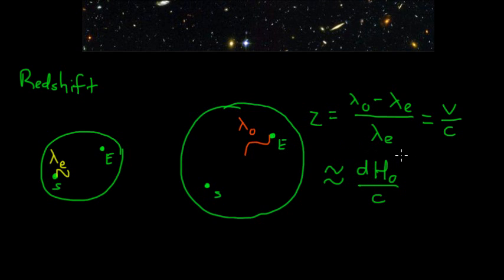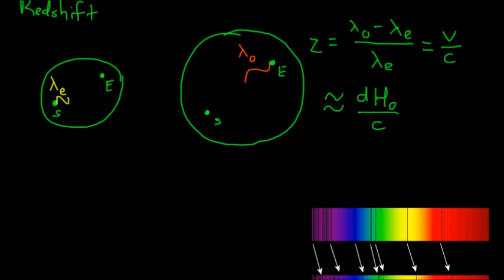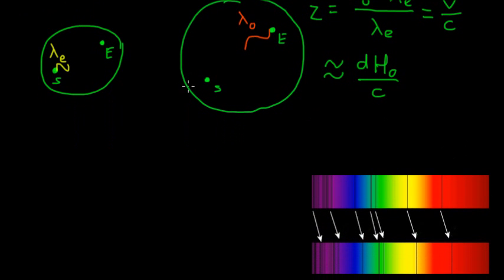Now in measuring this redshift, we might say, well, the wavelength of light that I observe, I can understand how I measure that. But how do I know what the wavelength of light was that was actually emitted from the source that is so far away? Well, to answer that question, we have to look at the spectrum of the light that we see coming from this source.